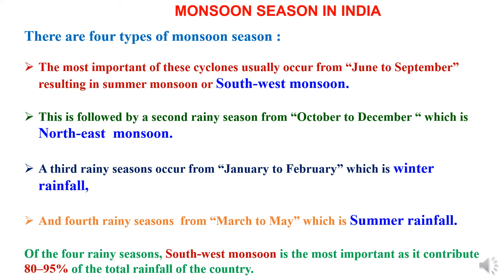Now to study monsoon seasons in India — there are four types of monsoon seasons. Southwest monsoon is the most important; it usually occurs from June to September resulting in summer monsoon or southwest monsoon. It is followed by a second rainy season from October to December called the northeast monsoon. A third rainy season occurs from January to February known as winter rainfall, and a fourth rainy season from March to May is called summer rainfall. Of the four, southwest monsoon is the most important, contributing around 80 to 95 percent of the total rainfall requirement of the country.